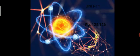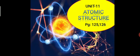Today we are going to start a new lesson in chemistry. So far we have completed two lessons in physics — motion and measurement — and one lesson in chemistry, matter around us, and one lesson in biology, animal kingdom. So totally four lessons we have completed. We are starting a new lesson in chemistry today: atomic structure, that is Unit 11, Atomic Structure, page 125 and 126.